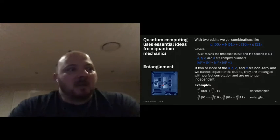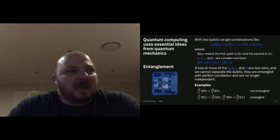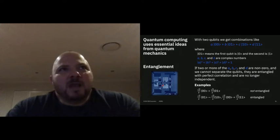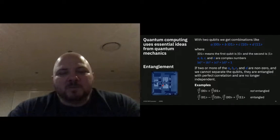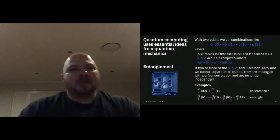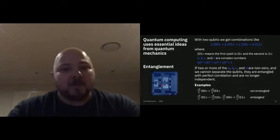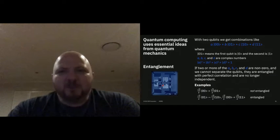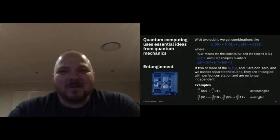There was an actual physical experiment done where they proved the transition — once they measured one, they could prove the other one knew what state it needed to be in faster than the speed of light. Which means there can't be some other particle emitted from one to tell the other what state it should be in. Einstein called it 'spooky stuff at a distance' — so if he didn't understand it, I'm quite within my rights not to understand it either.